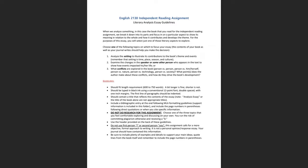How you decide which plot events to leave in and which to leave out is totally based on the point you want to make about setting, the speaker, or conflicts. The most effective way to write about literature — what we English teachers call 'show rather than tell' — is by making a point and then quoting from the text itself to illustrate that point. Just be sure to put page numbers at the end of any quotation; that's all you need as an in-text citation.